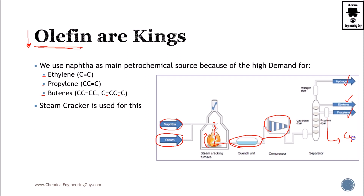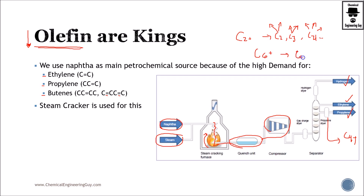Whenever I say C2+, that means it contains all C2, C3, C4 and so on — ethylene, ethane, propane, propylene, butane, butylene, and so on. And whenever I say C6+, this refers to all material with six carbons and more.